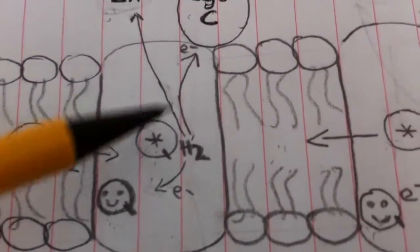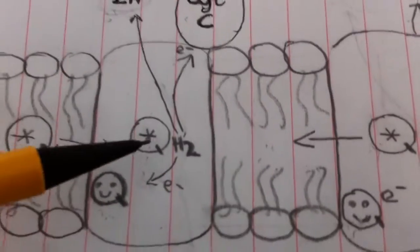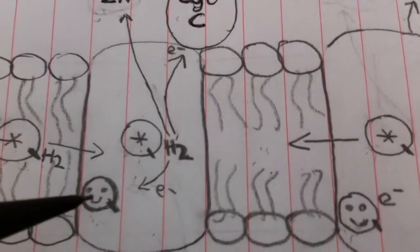on complex 1 or complex 2. It diffuses through the membrane and comes to complex 3. It gives one of its electrons to this oxidized coenzyme Q that was already there.